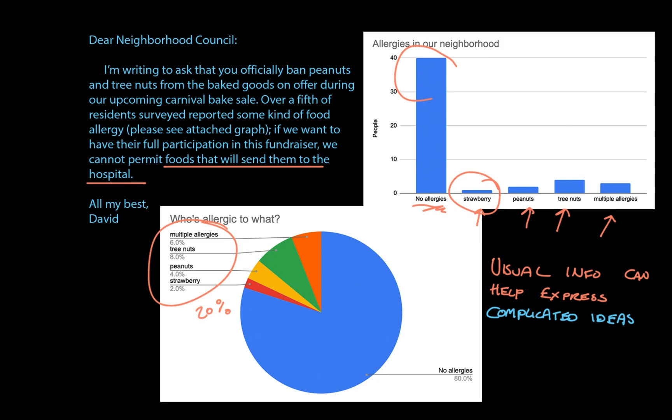You know, like chocolate and peanut butter — oh no, sorry, bad example. Like chocolate and sunflower butter. You know what I mean. You can learn anything. David out.